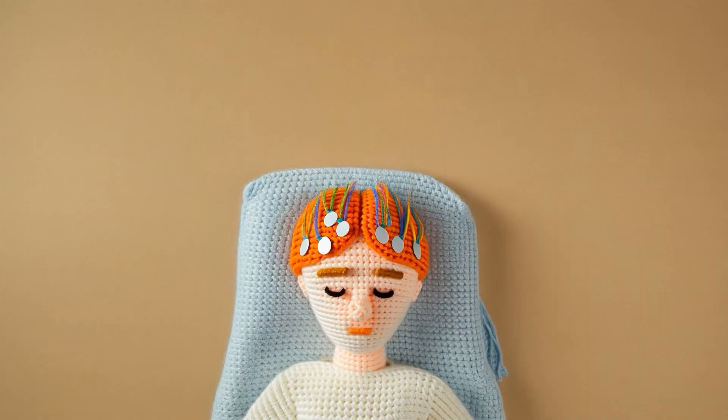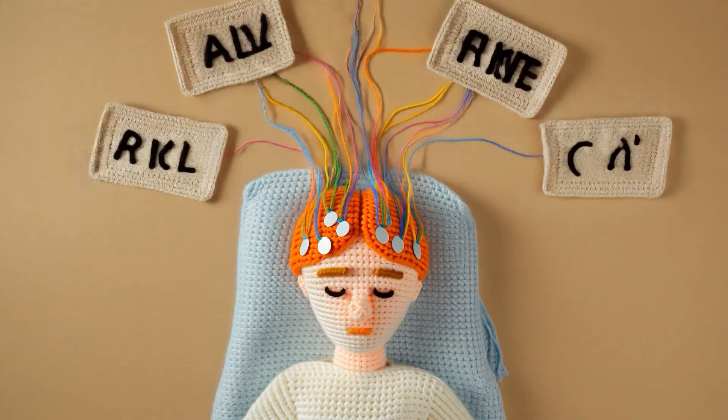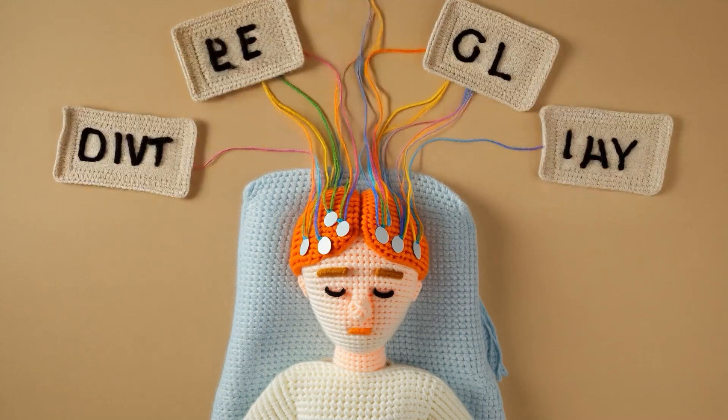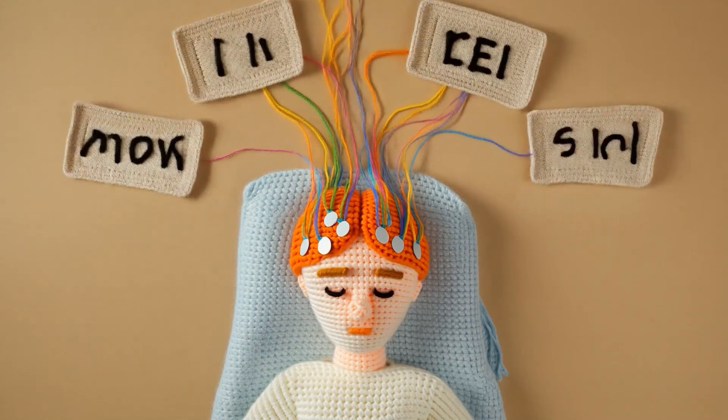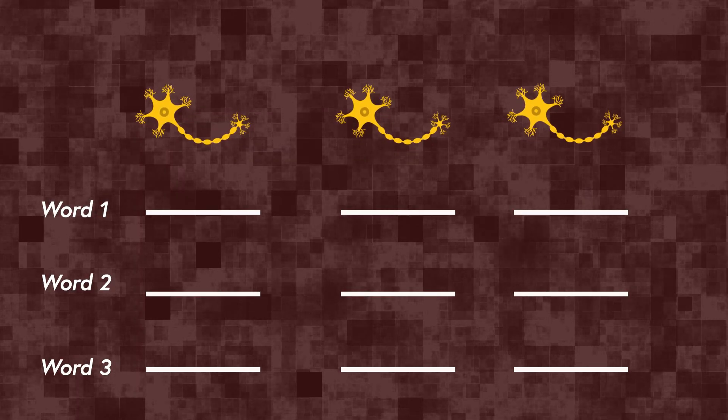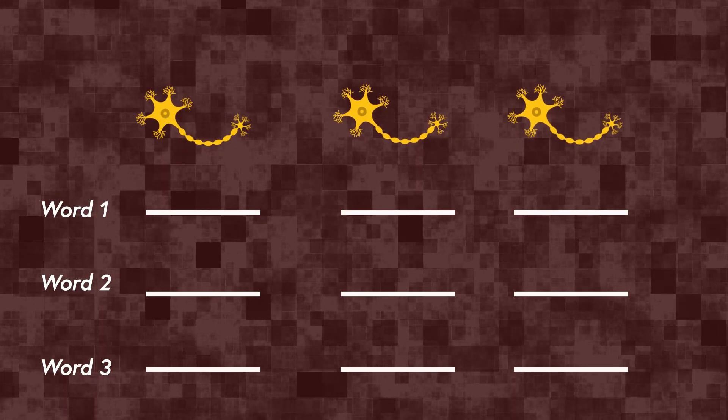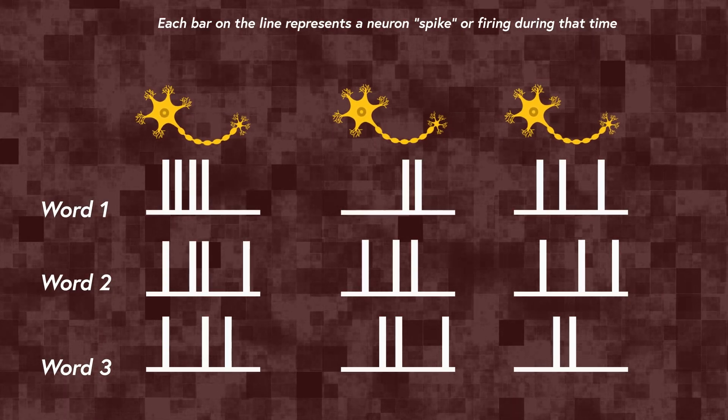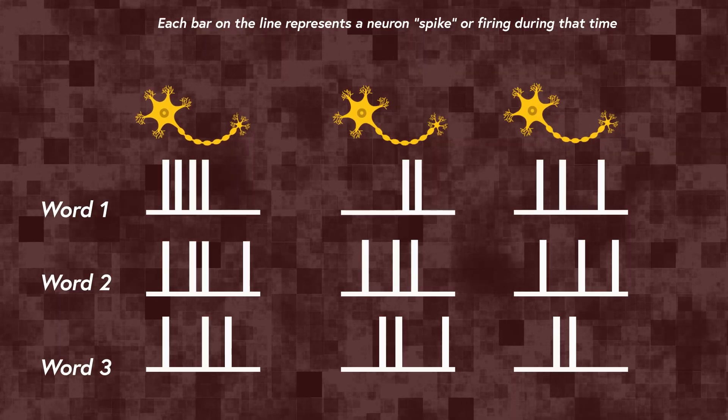So how did researchers discover time cells? They recorded brain activity from epilepsy patients performing memory tasks where they recalled a list of words presented to them, then broke each trial into small time bins, like dividing a movie into frames, and calculated how active each neuron was in each bin.